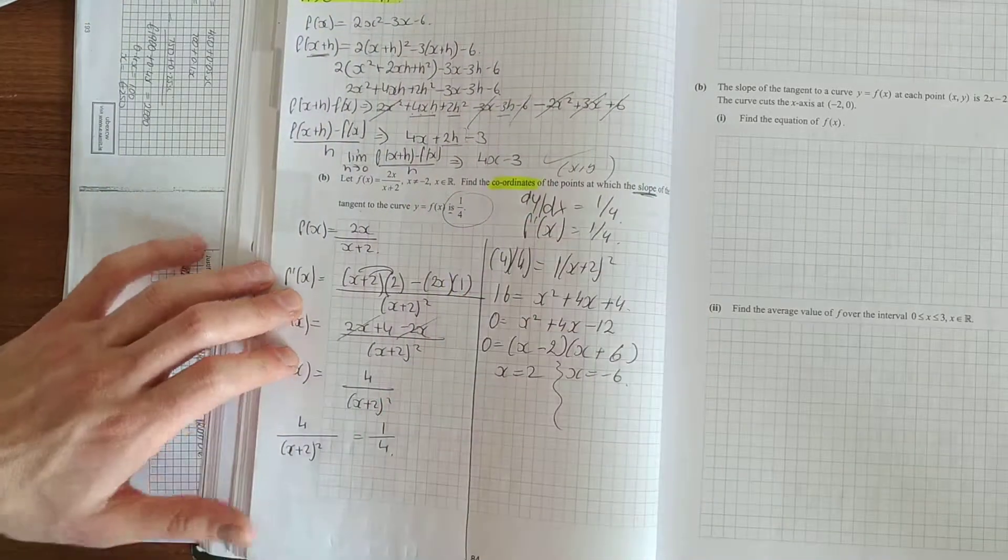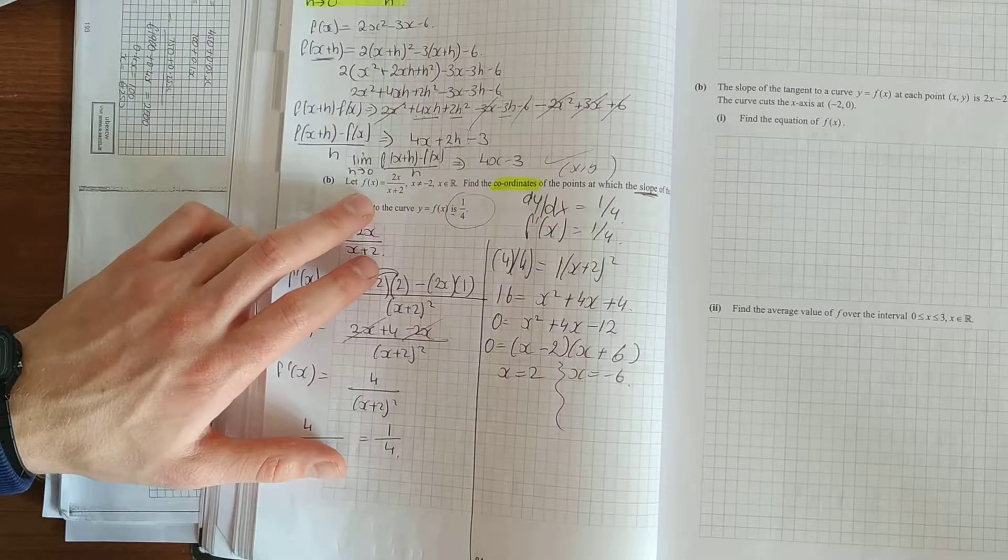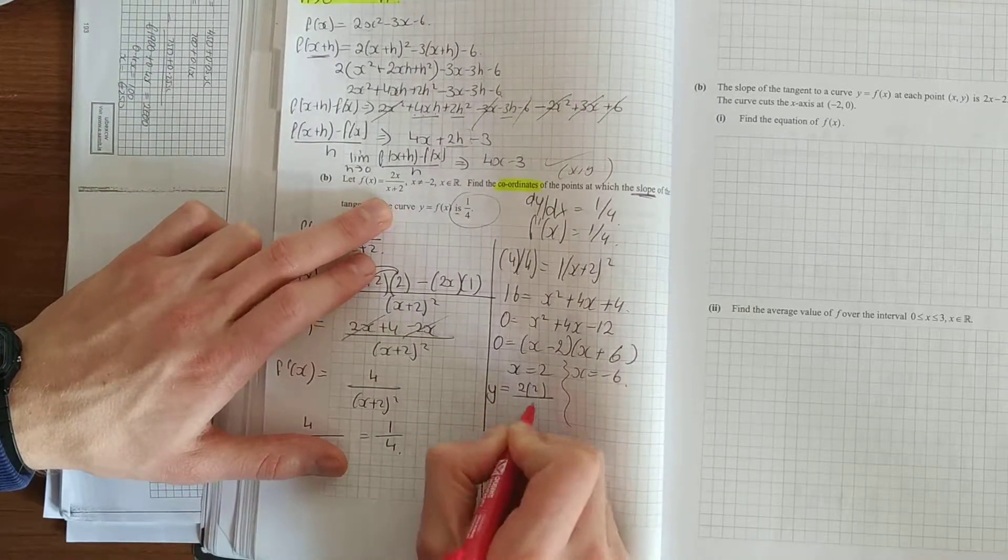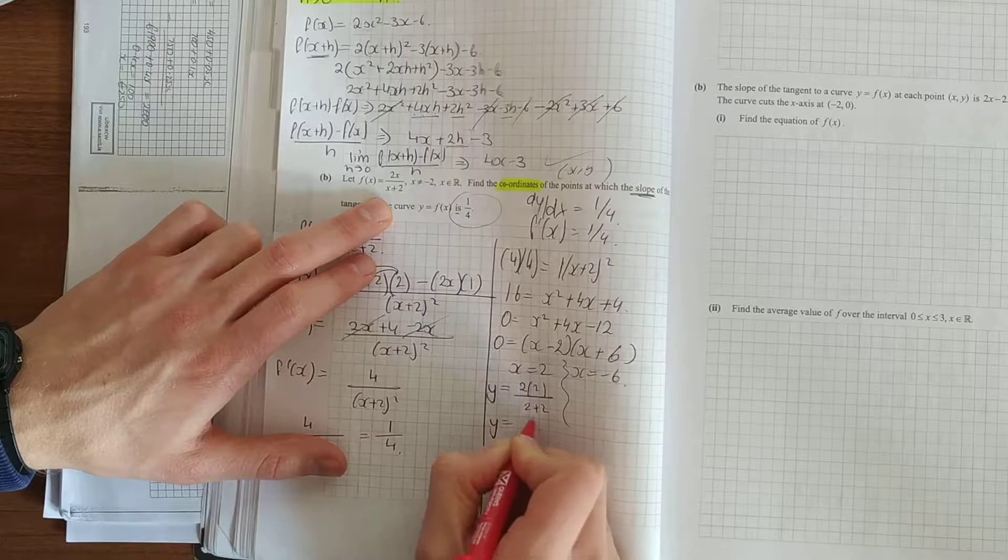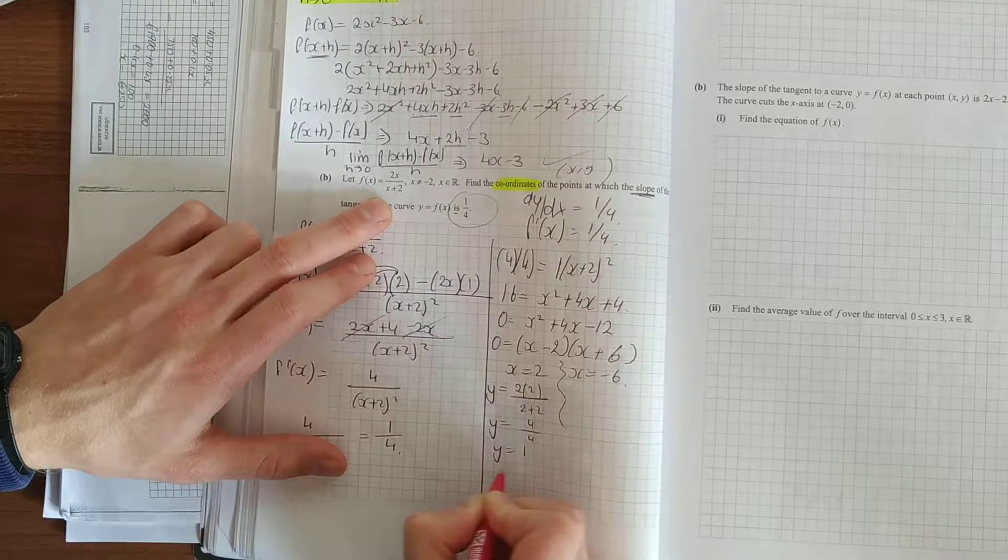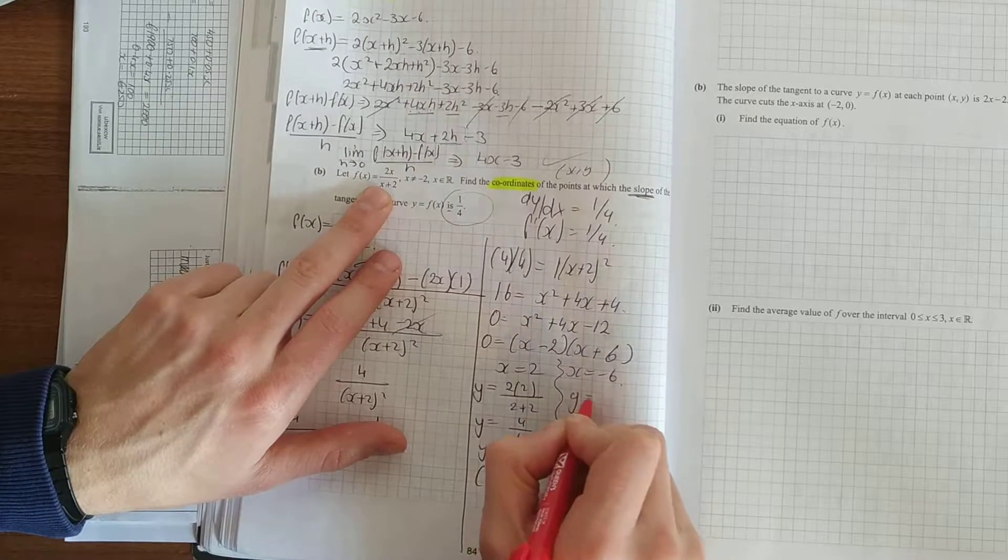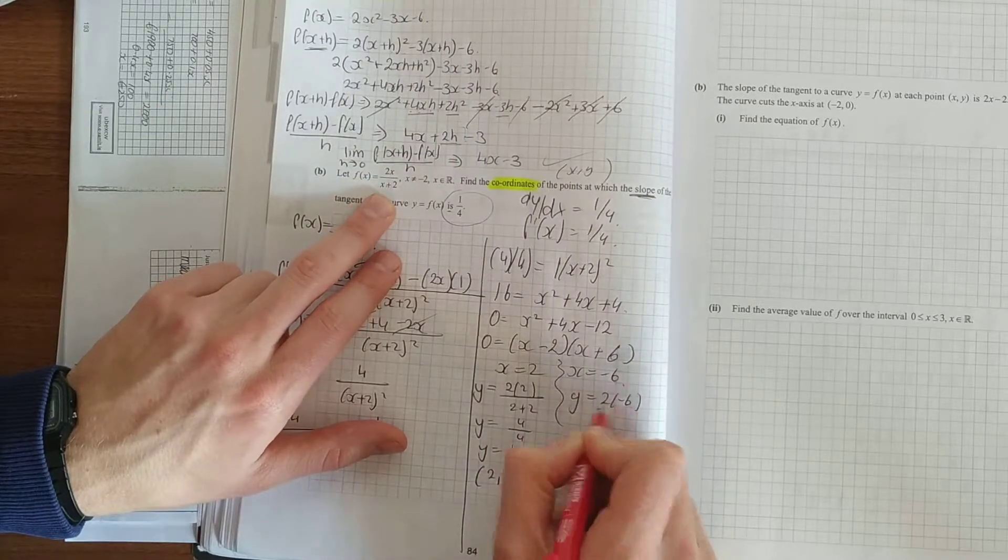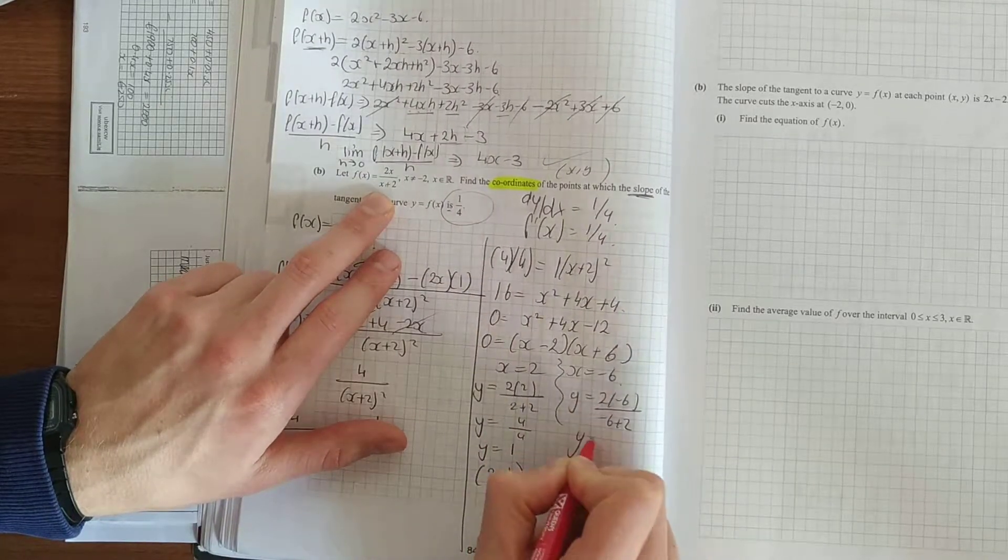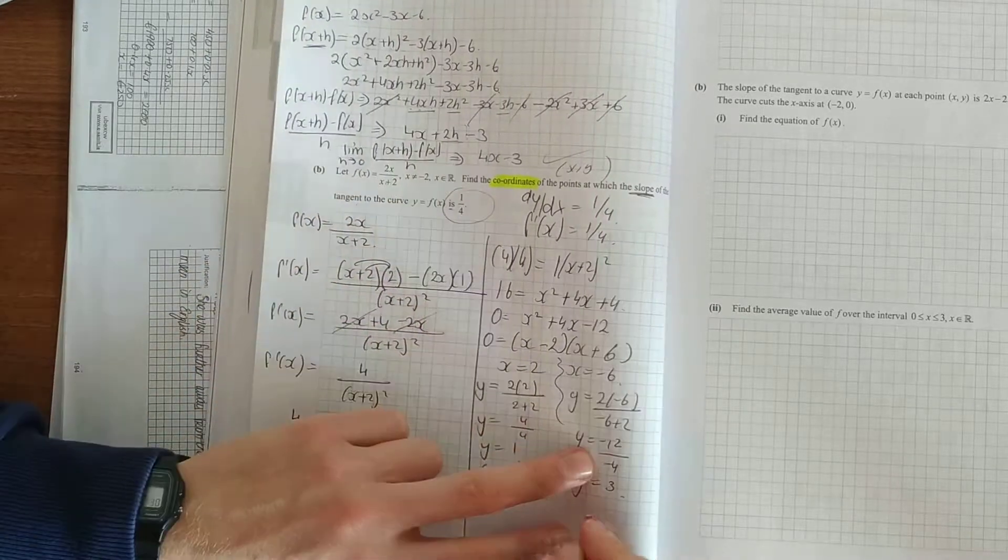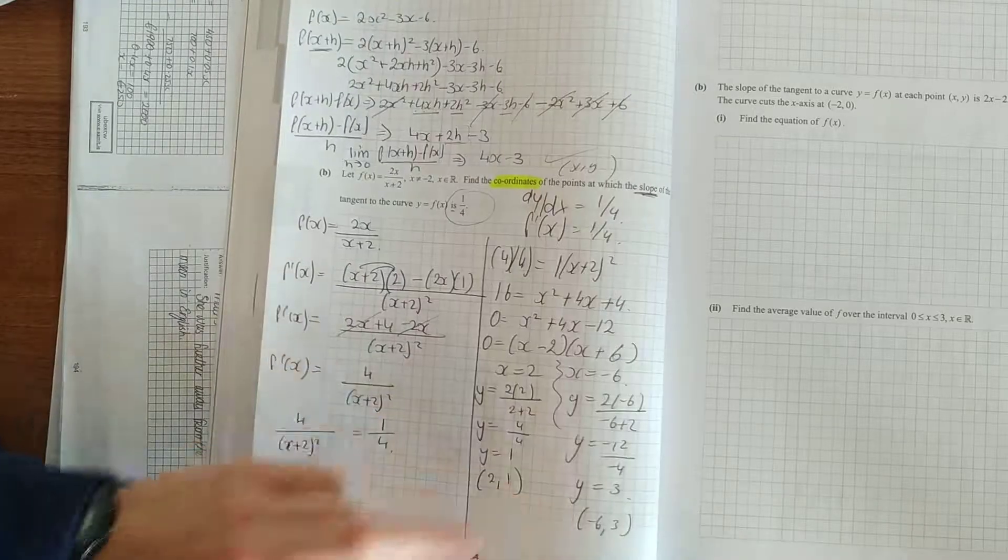Where you want to get your y. Back up your f(x). So y is equal to 2 times 2. y is equal to 4 over 4 which is 1. So our point is (2, 1). And up here we have y is equal to 2 times minus 6. Plus 12 or minus 4. y is equal to 3. Our other point is (minus 6, 3).